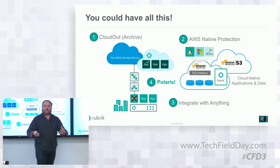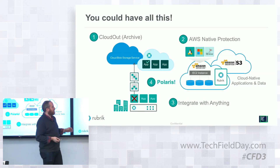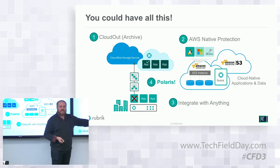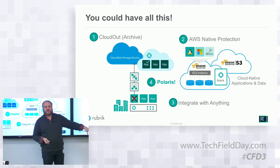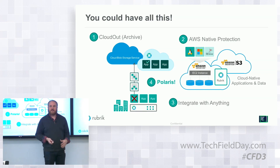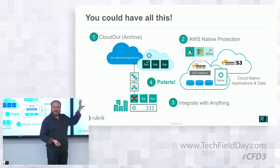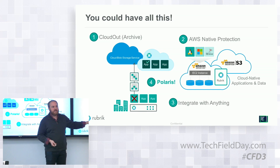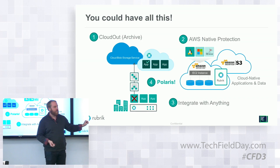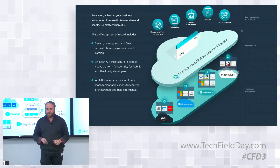What I thought was cool, listening to the rest of my team present, is that when we're talking about the integration — that could be the physical appliance, it could be a cloud cluster. The idea behind all these different points on the chart is that it doesn't matter how you deploy Rubrik. They're all perfectly valid, because the software is the same. So let's talk about Polaris.